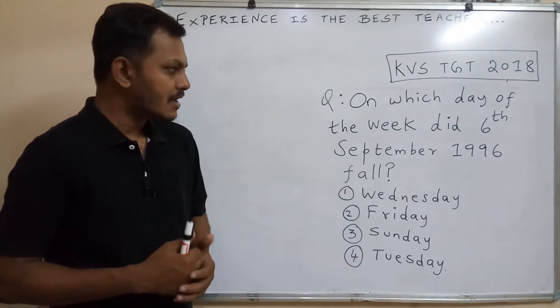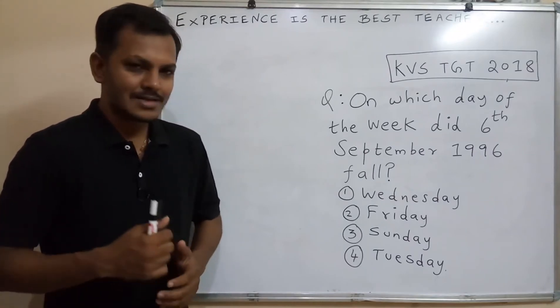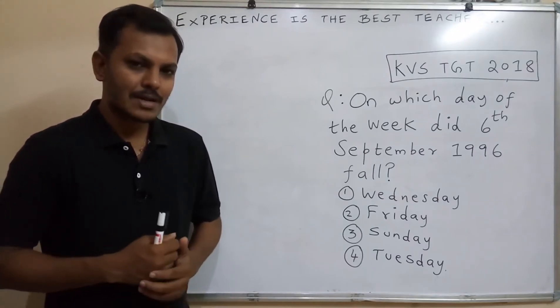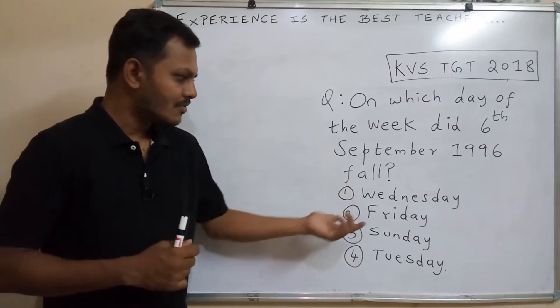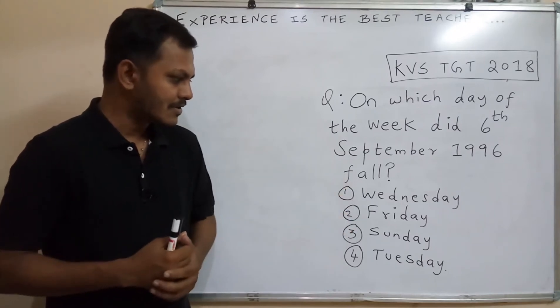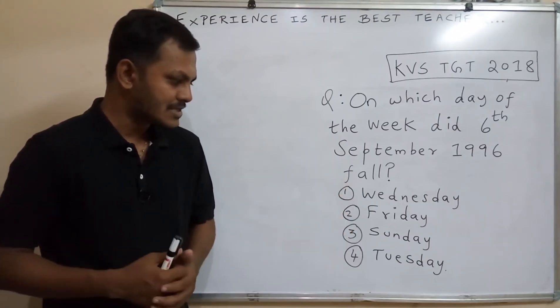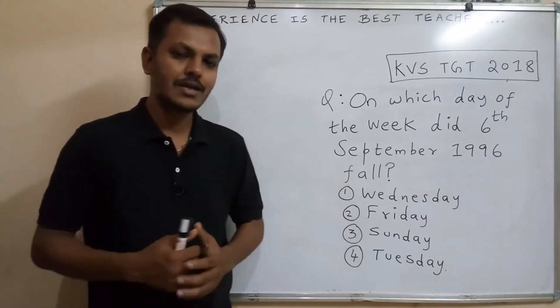On which day of the week did 6th September 1996 fall? Four options are given: Wednesday, Friday, Sunday, and Tuesday.